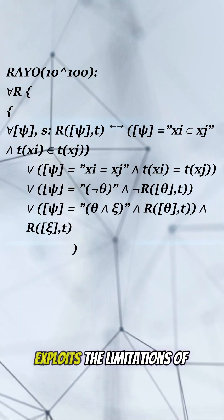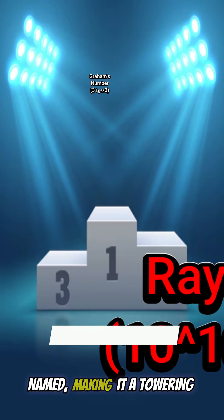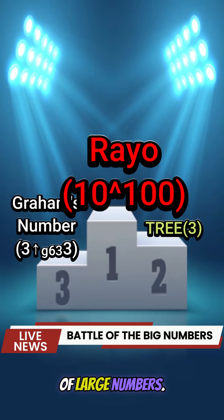In essence, Rayo's number exploits the limitations of formal language to leap beyond what can even be named, making it a towering giant in the hierarchy of large numbers.